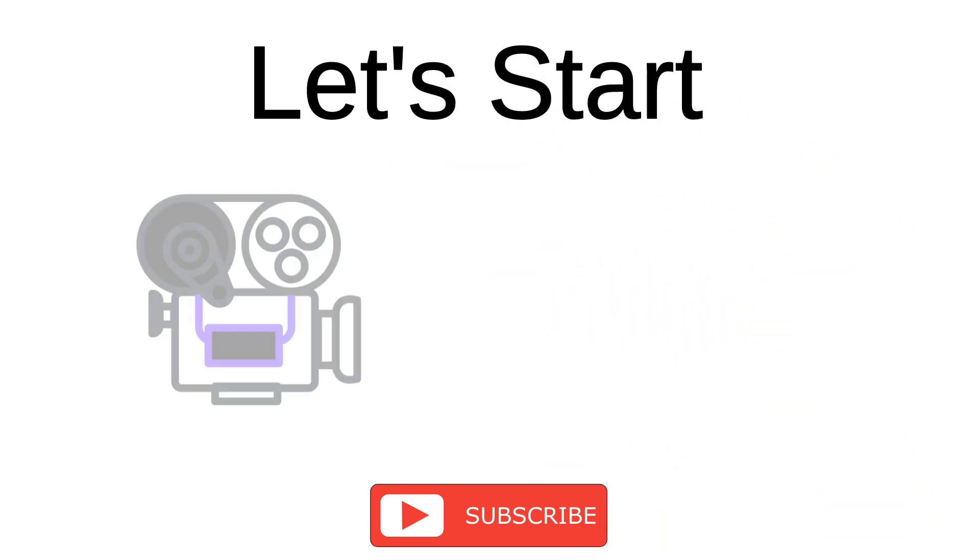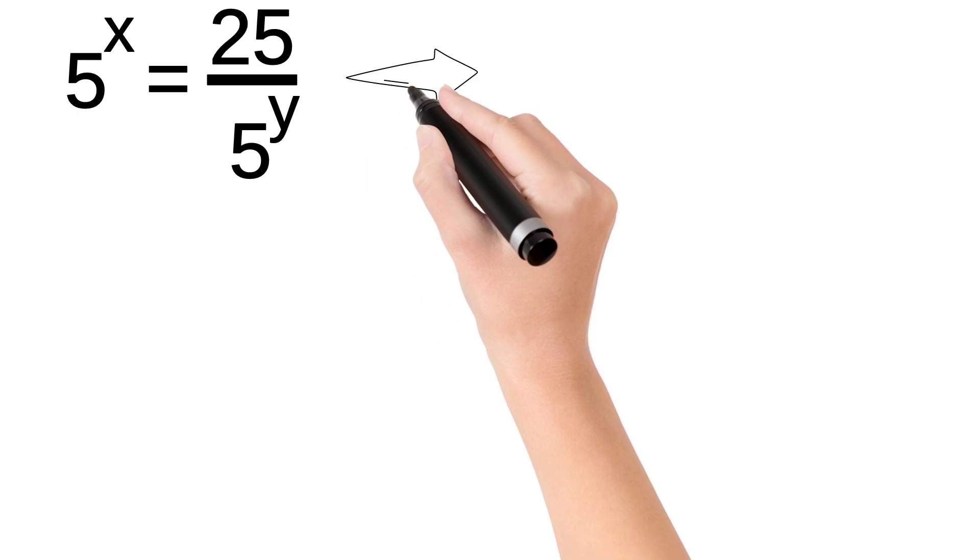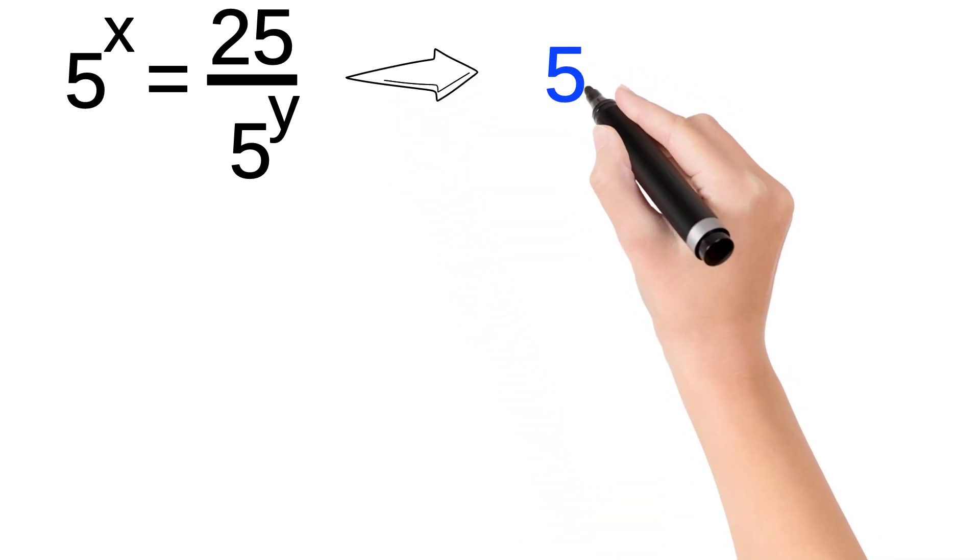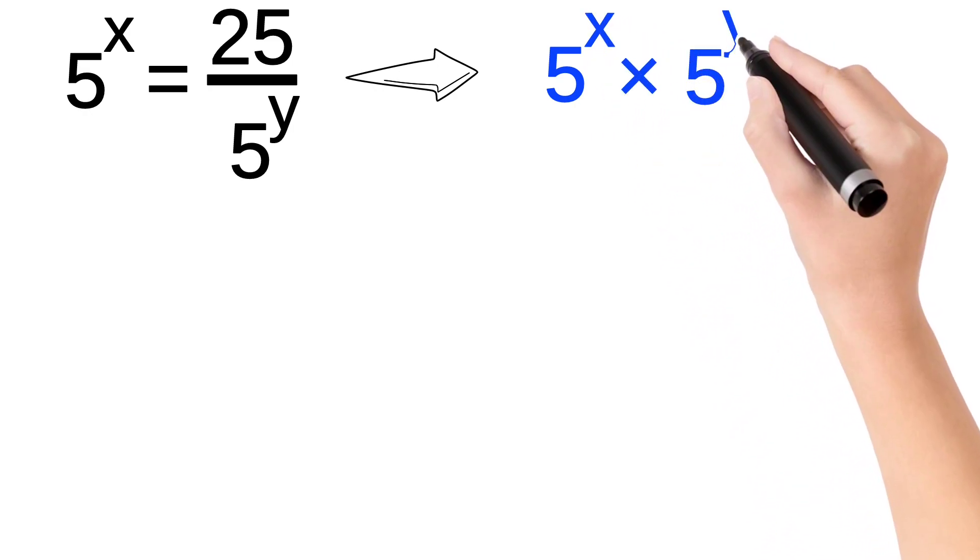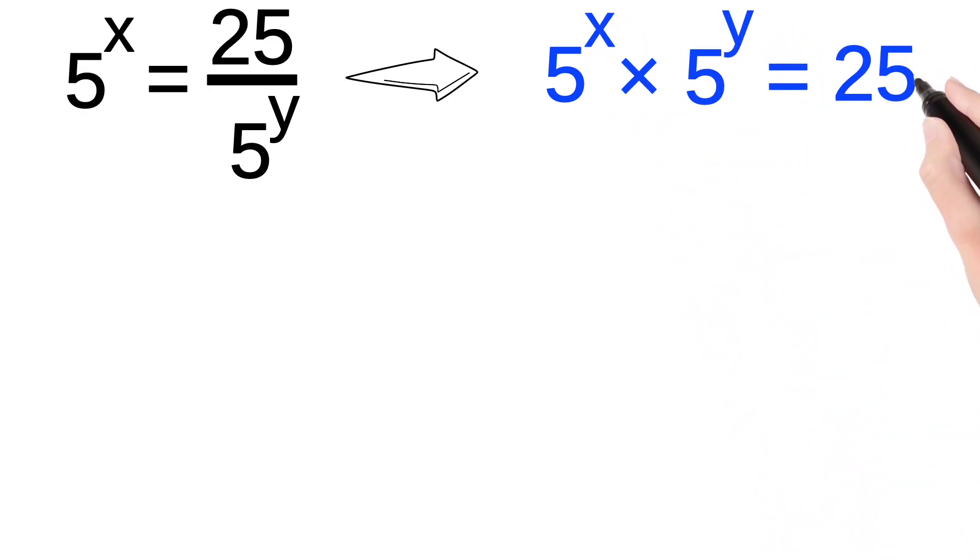Let's start the video without wasting any time. First of all, we have to do the cross multiplication. As a result, we will get 5 to the power x into 5 to the power y equals 25.